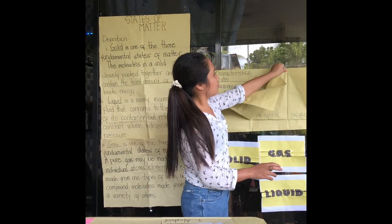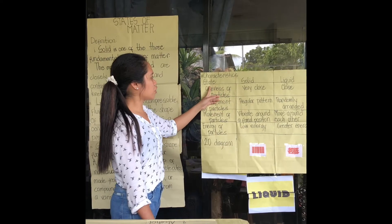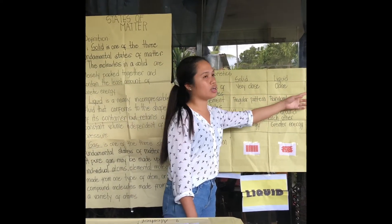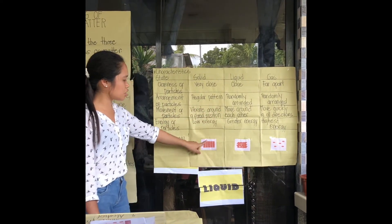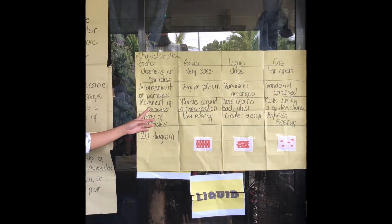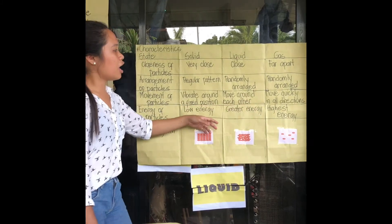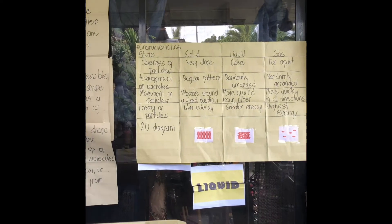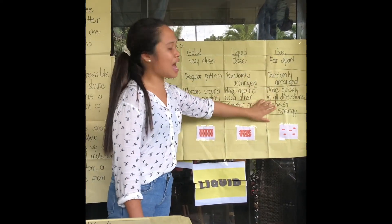Do you understand what are the states of matter? Yes. Solid, liquid, gas. Very good, Mary. I want you to look for the characteristics of each state of matter. For solid, particles are very close. For liquid, particles are close. For gas, particles are far apart. For arrangement of particles — solid is in a regular pattern, liquid is randomly arranged, and gas is also randomly arranged. For movement of particles — solid particles vibrate around a fixed position, liquid particles move around each other, and gas particles move quickly in all directions. For energy of particles — solid has low energy, liquid has greater energy, and gas has the highest energy.